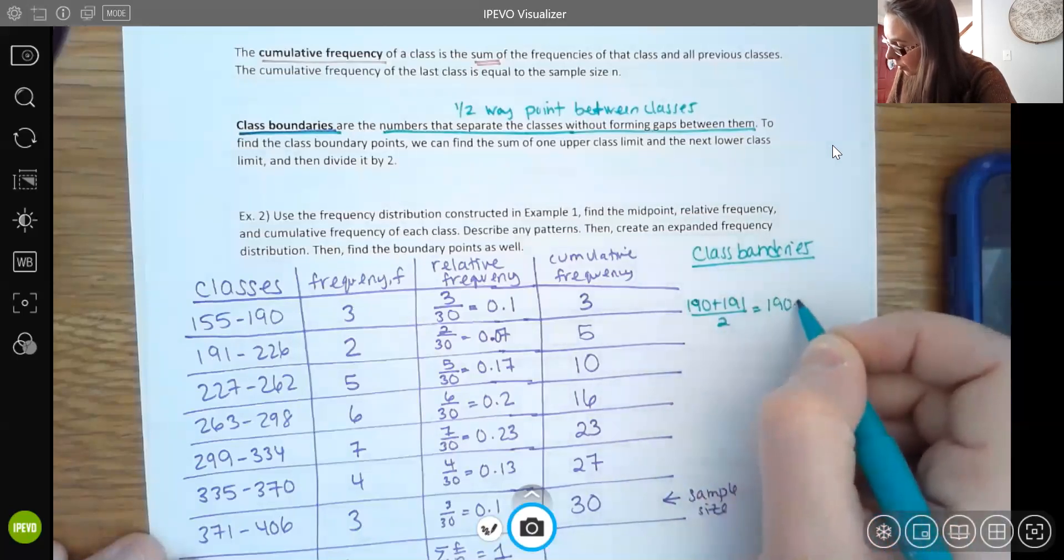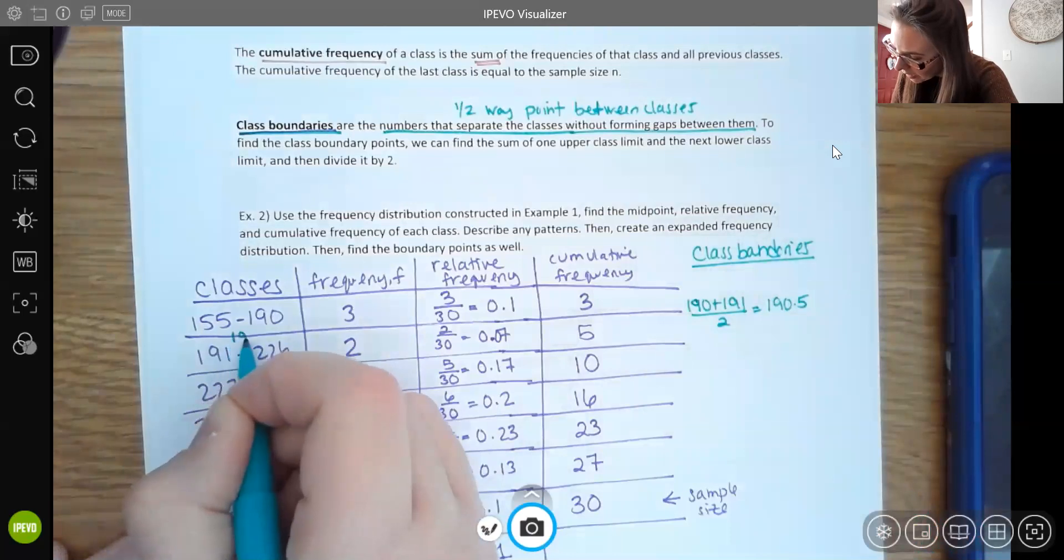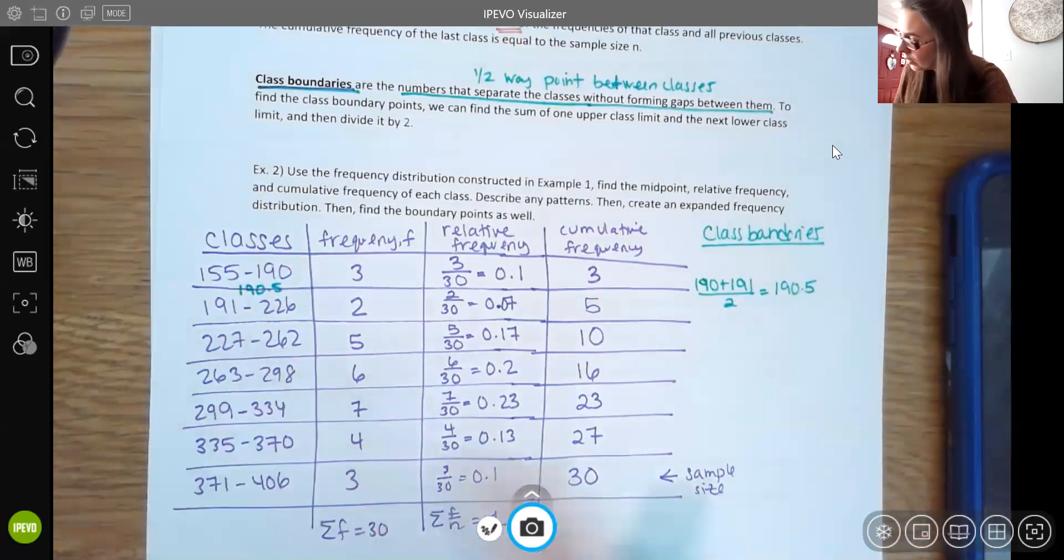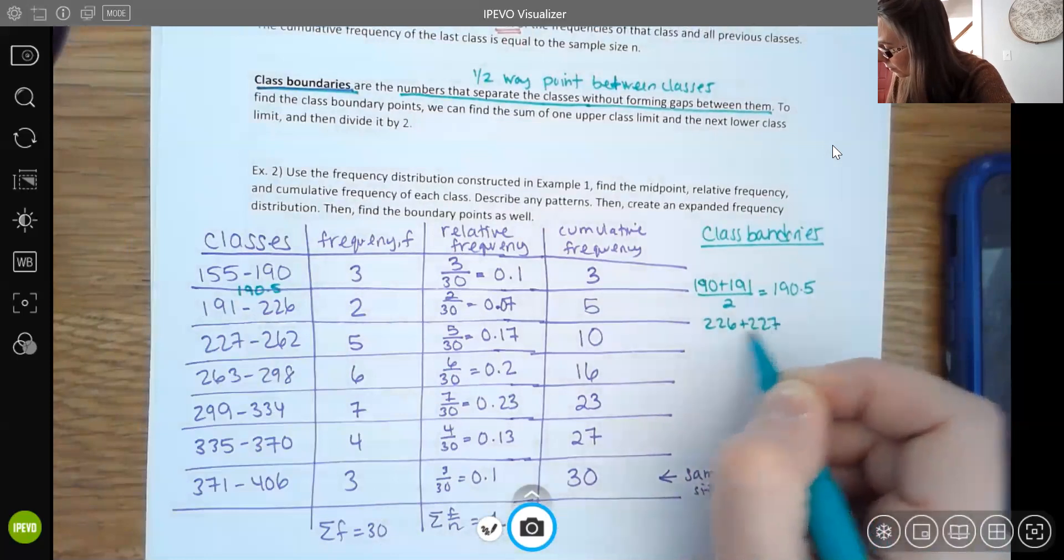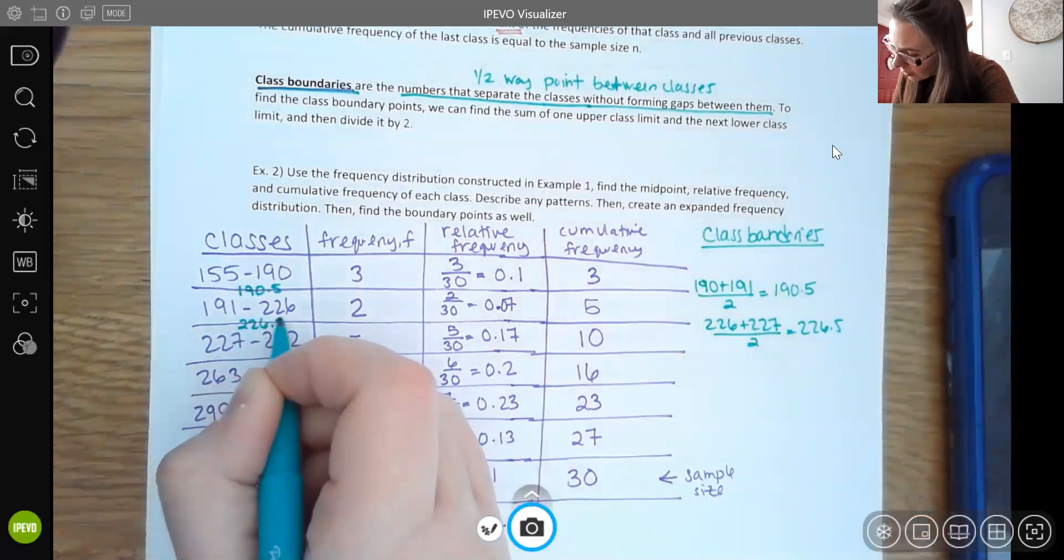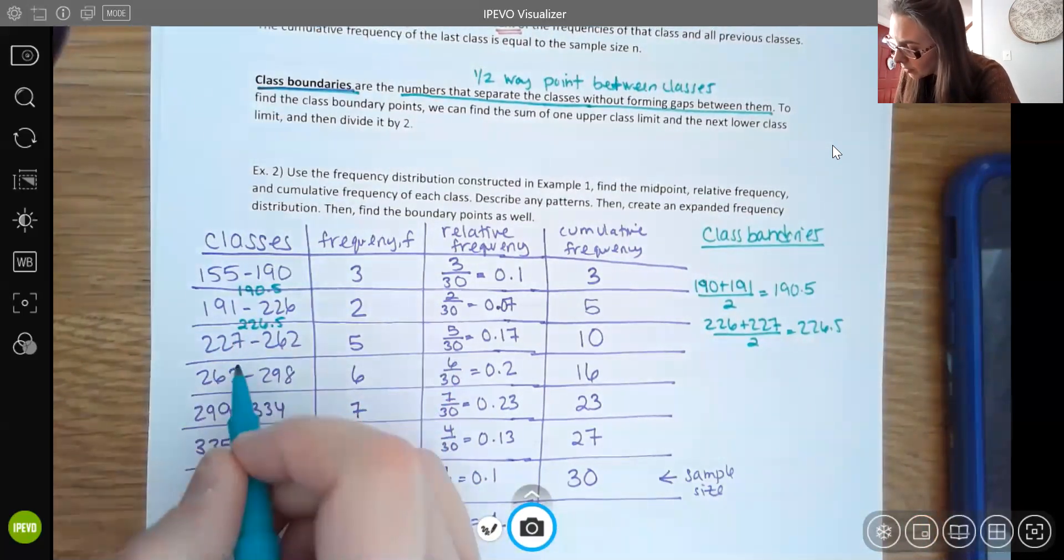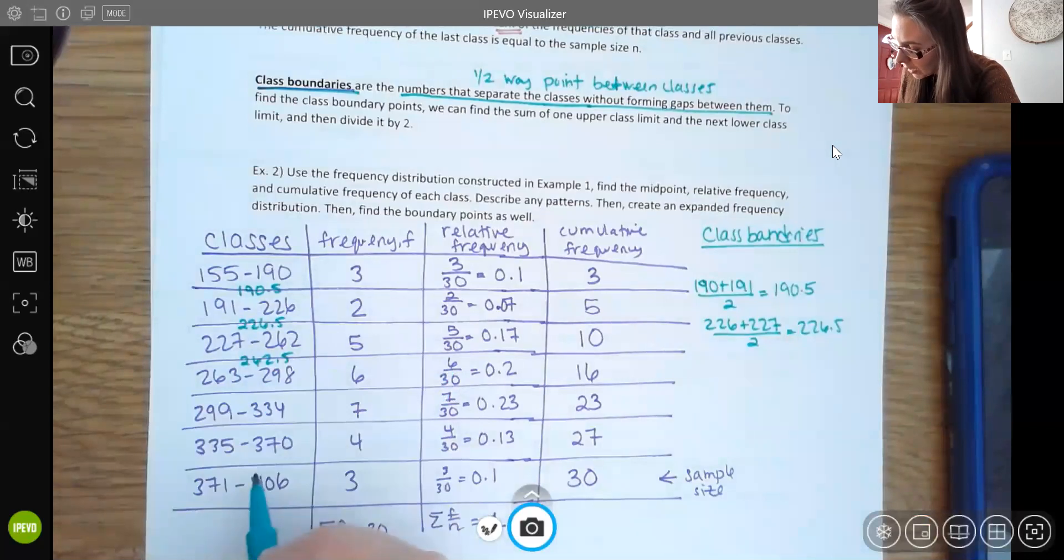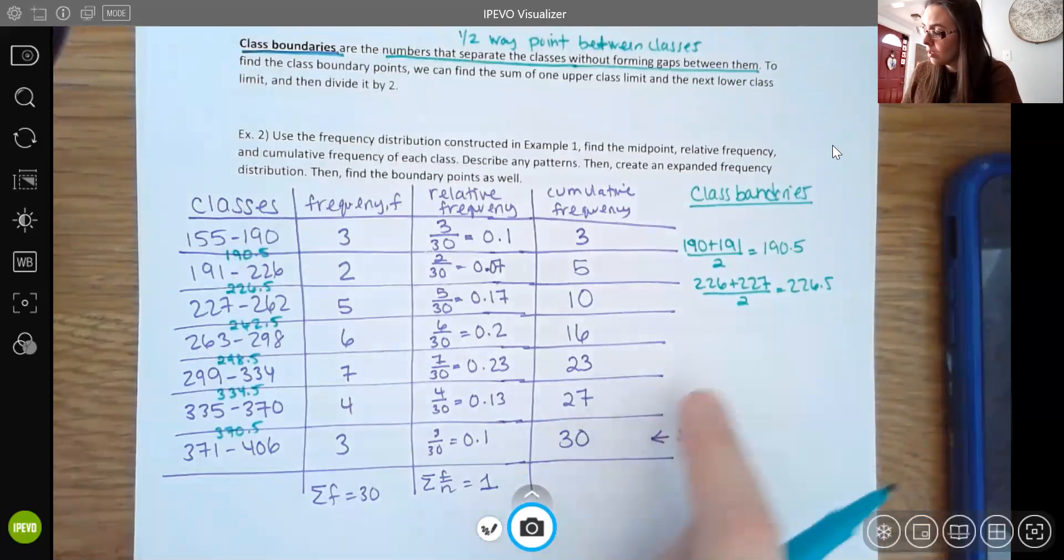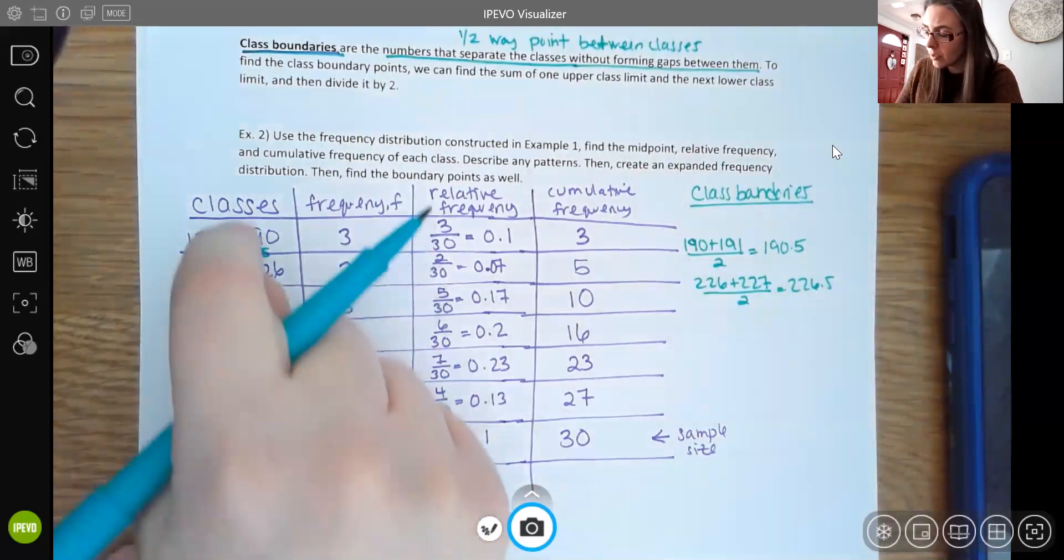So that's going to be 190.5. So that 190.5 is kind of right there in between. And then I would do the next group, 226 to 227. I'm going to get 226.5. So that's going to be your boundary point in between. From here to here, it's going to be 262.5 and then 298.5, 334.5 and 370.5. And I'm just finding the average between the upper and the next lower limit. Because it's whole numbers, it's easy. I just put that 0.5. But if it's decimals, you do the same thing. You're just going to find that average and divide it by 2.